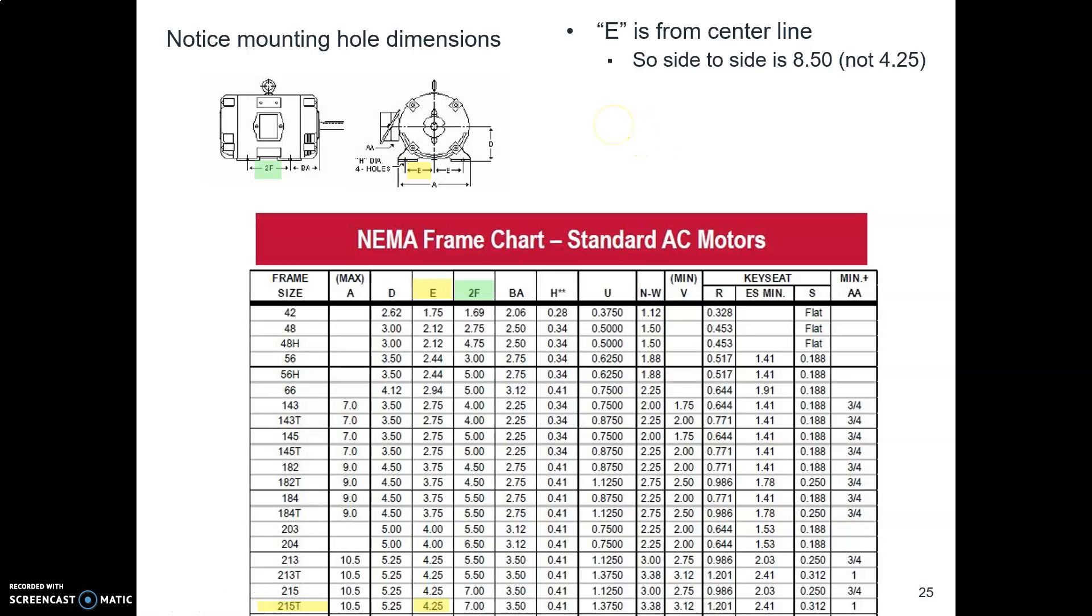However, for some reason NEMA has helpfully combined the two dimensions together. So according to these pictures, 2F is the spacing from the back hole to the front hole. There is the 2F. The 2F dimension is 7 and you can just go with that. Every motor manufacturer's chart does it this way.